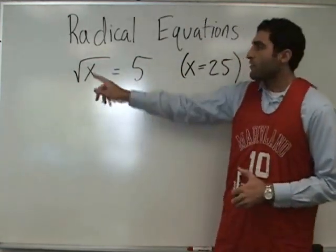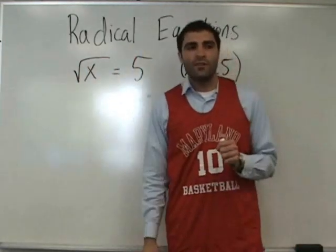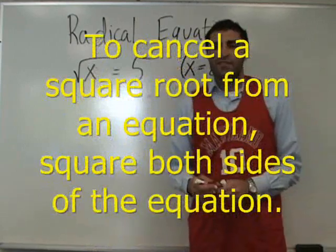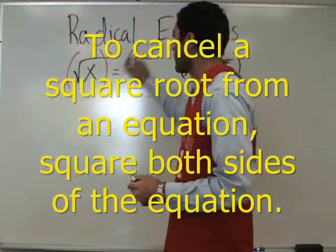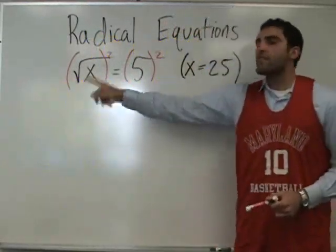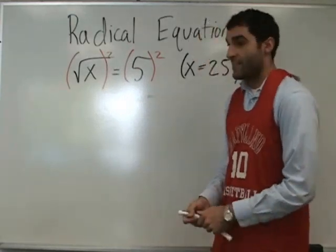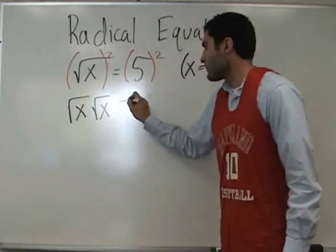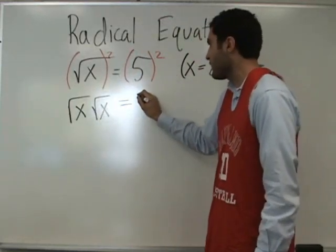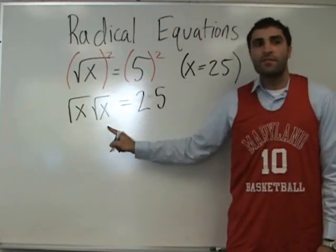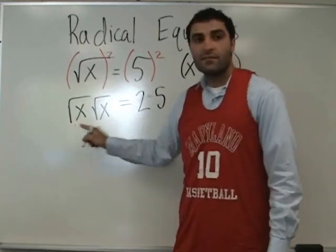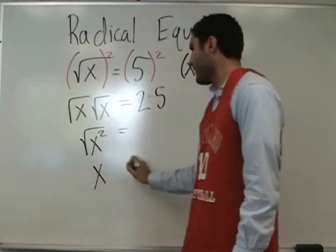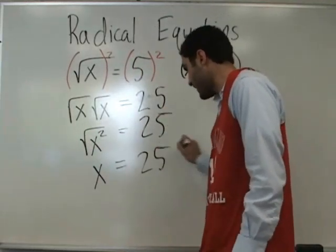Here is the idea: to cancel square roots, you square both sides of a square root. Watch — square both sides. What is the square root of X times the square root of X? X. Correct. The square root of X squared is X. And 5 squared is 25, so X equals 25.